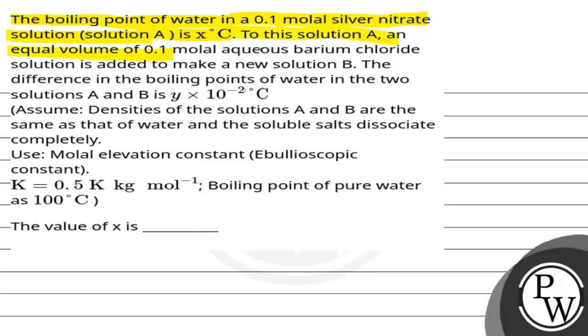To this solution A, an equal volume of 0.1 molal aqueous barium chloride solution is added to make a new solution B. The difference in the boiling points of water in the two solutions A and B is y multiply by 10 to the power minus 2 degrees Celsius.